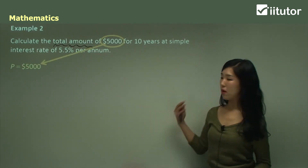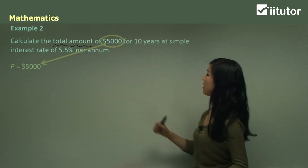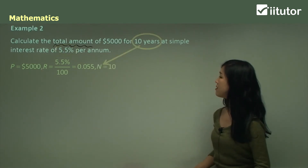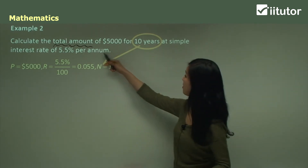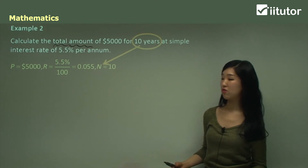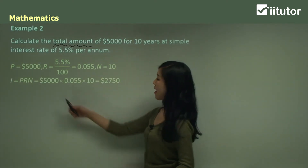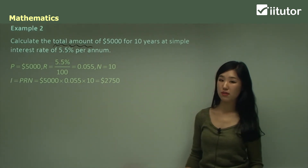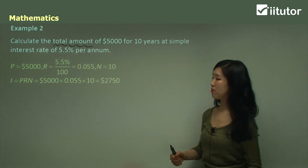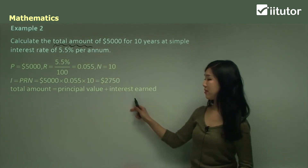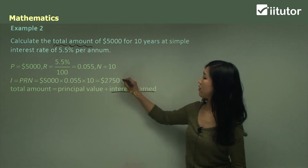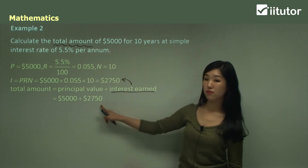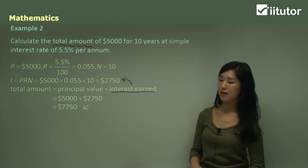P is $5,000, R is 5.5% or 0.055 as a decimal, and N is 10 years — no conversion needed since both are in the same units. First calculate the interest: I equals $5,000 times 0.055 times 10, giving $2,750. That is just the interest. For total amount, we add the principal: $5,000 plus $2,750 equals $7,750. That's the final answer.